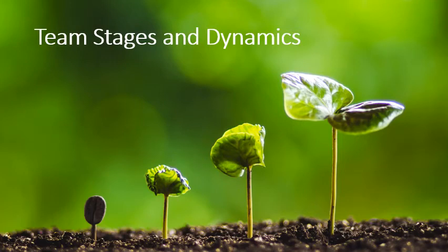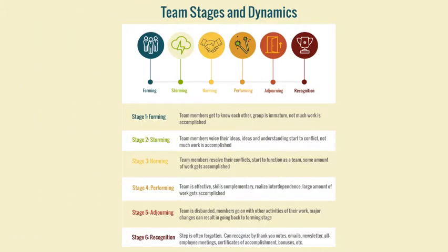Next up is looking at team stages and dynamics. Let's look at the six different types of team stages and dynamics. Stage one is forming. This is where team members get to know each other. The group is immature and not much work is being accomplished. Stage two is storming. Team members voice their ideas, and ideas and understanding may start to conflict. Not much work is being accomplished there either. Next, we move on to norming. Team members resolve their conflicts and start to function as a team.